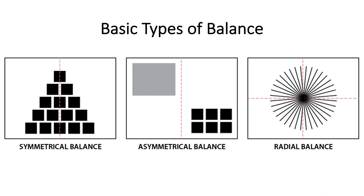Then we have radial balance, which is a different type of symmetry. In radial balance, you have a circular design, and whatever angle you draw your axis from — whether vertical, horizontal, or diagonal — it will be the same on either side of that axis.